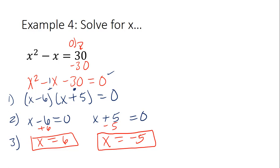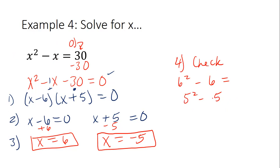Step four: if you're not sure what you did, check yourself. I can plug in my answers. If I plug in six: six squared is 36, minus six is 30. And plugging in negative five: a negative times a negative minus negative five makes a plus five, which makes it 30. When you're checking, you plug that number in for every x — I'm not plugging in six here and five there; I'm plugging in six and six, five and five.